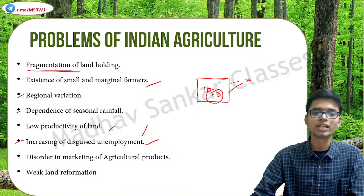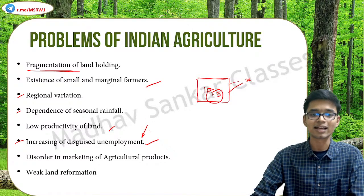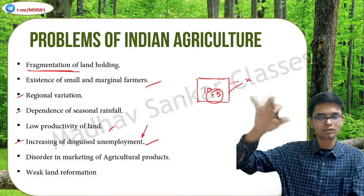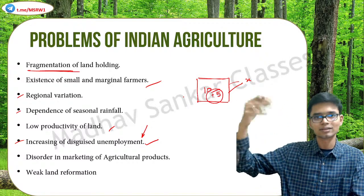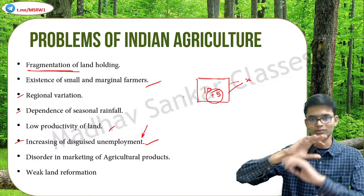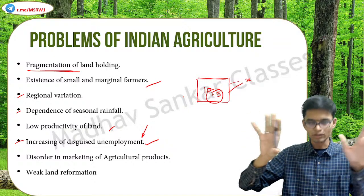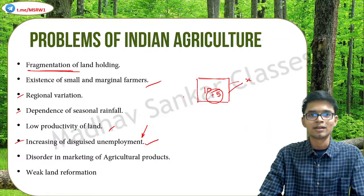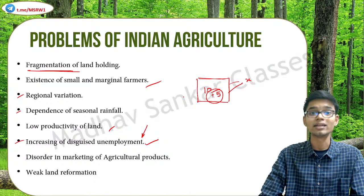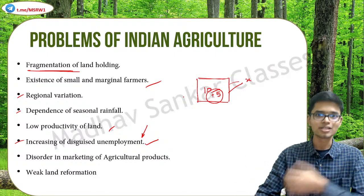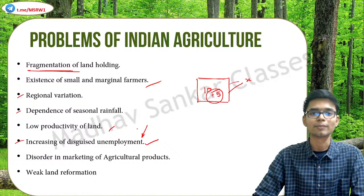Disguised unemployment is a severe issue in Indian agriculture, especially because many people from cities who had jobs in industry and the IT sector have entered agriculture. The agricultural sector in India is becoming highly saturated, and this saturation is what is causing disguised unemployment.